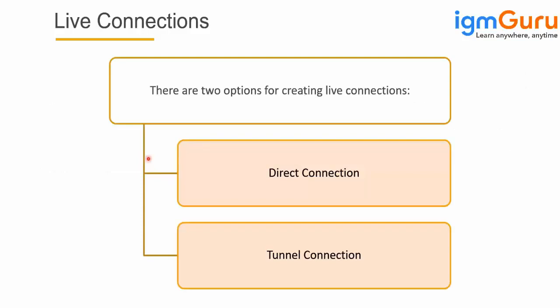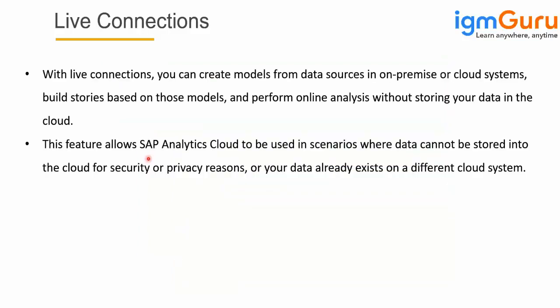There are two mechanisms to create live connections. Live connection is basically used when you don't want to replicate data in your cloud or SAC server for security or privacy reasons, because certain customers don't want their data to be copied to another system. They don't want data to leave from their landscape. For security purposes, it's always good to have live connections.